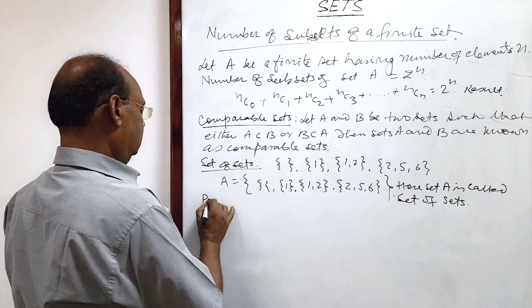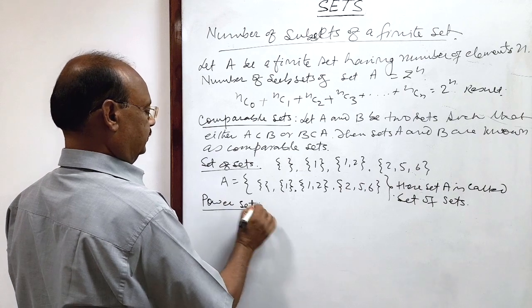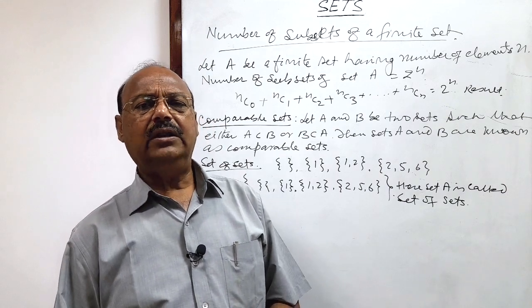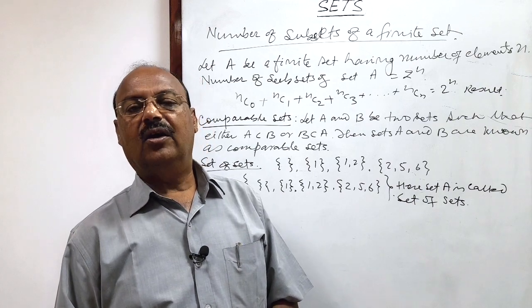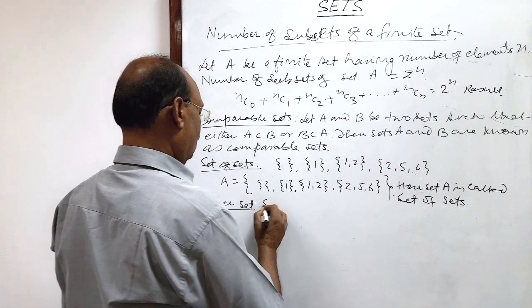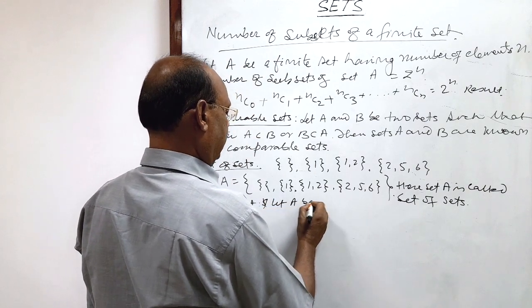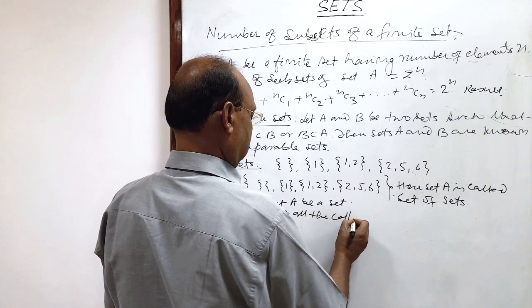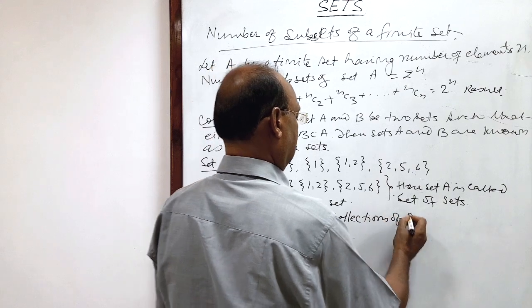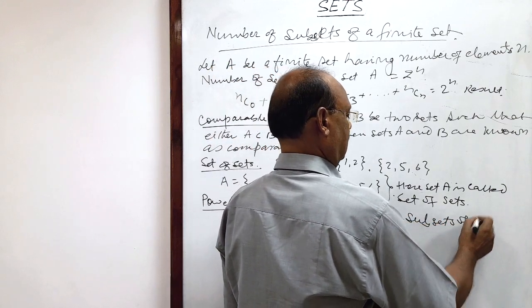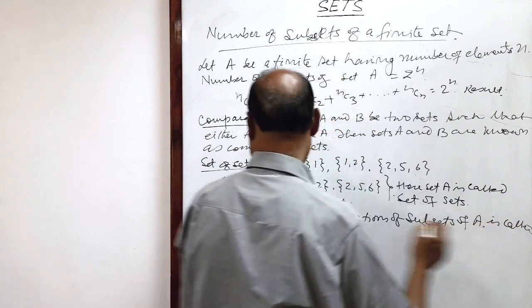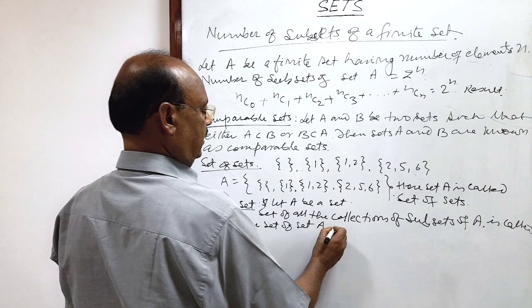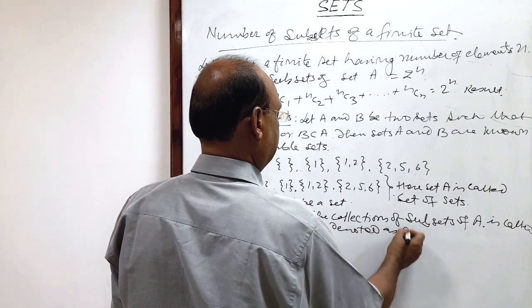Now we will discuss power set — what is a power set? The definition of power set is: the collection of all the possible subsets of set A is called the power set of set A. Let A be a set; the set of all collections of subsets of set A is called the power set of set A, and this is denoted as P(A).